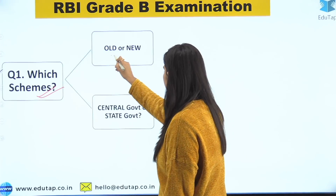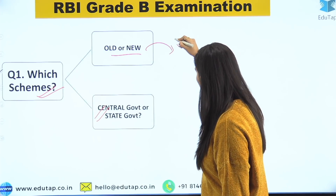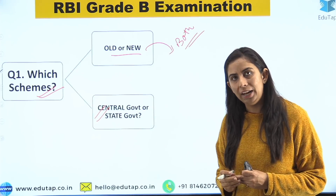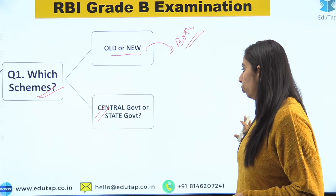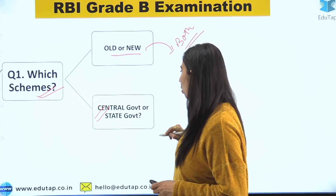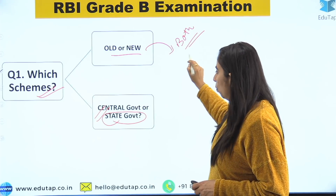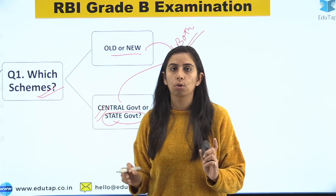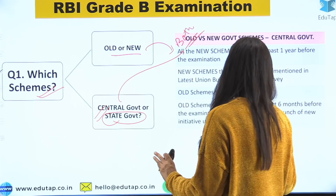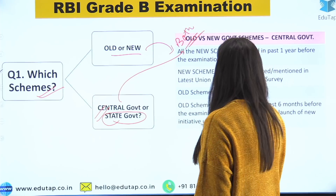Which schemes should you cover — old and new, central government, or state government? For old and new, my answer is both. You have to cover both, but there is a segregation that will help you. When I say old and new, I'm referring to central government schemes, not state government schemes. Old versus new — there is no 'versus'; they go together.